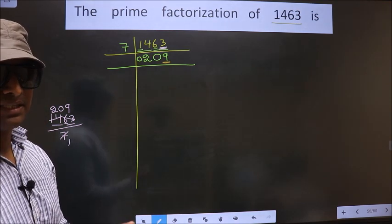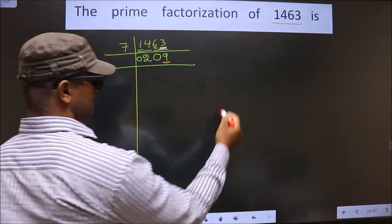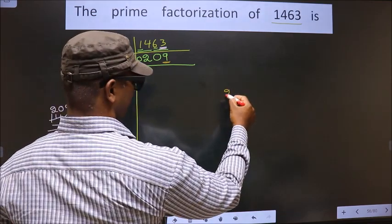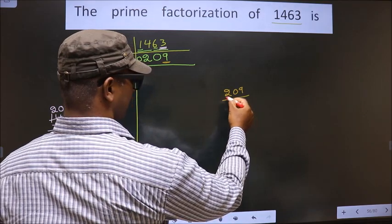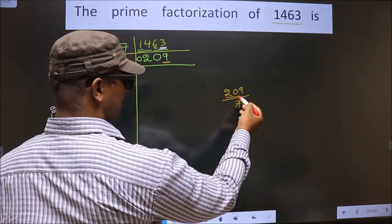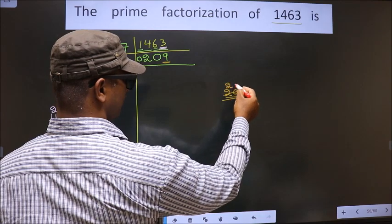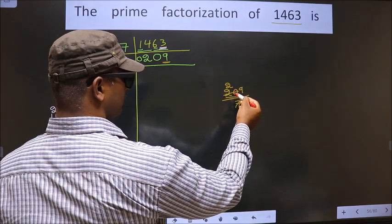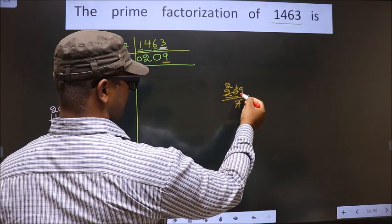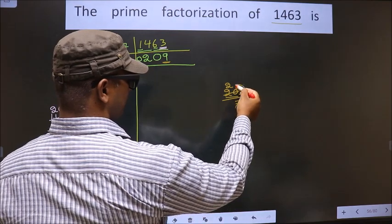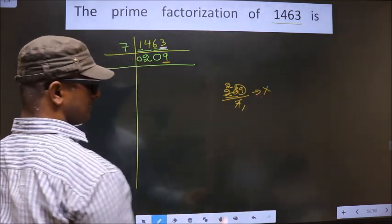The next prime number is 7. Let us check divisibility by 7. That is, 209 by 7. Here we have 20; a number close to 20 in the 7 table is 7 twos are 14. 20 minus 14 is 6; 6 carried forward, it becomes 69. We don't get 69 in the 7 table. So, this number is not divisible by 7.